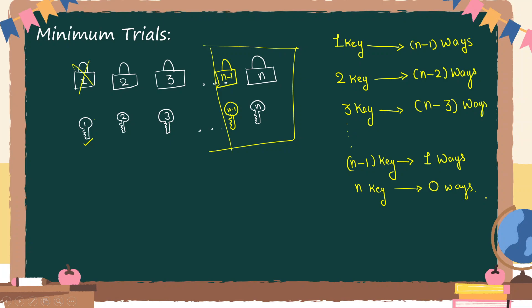Notice the difference: for the minimum case, whatever is logically obvious we skip. For the maximum we still try it. The last key and last lock is obvious, but for maximum we count it; for minimum we don't, since we want as few trials as possible. Again, to get the total minimum ways, we add — because the keys are tried one after another, not simultaneously.